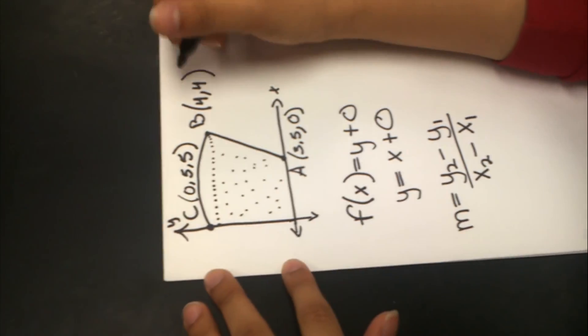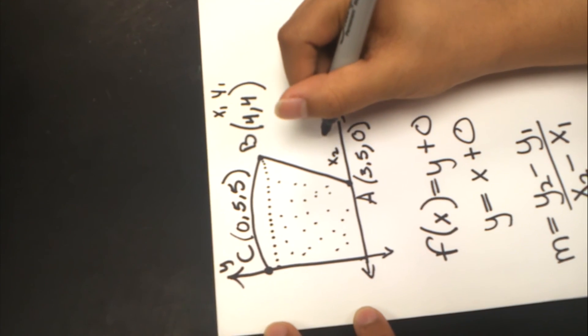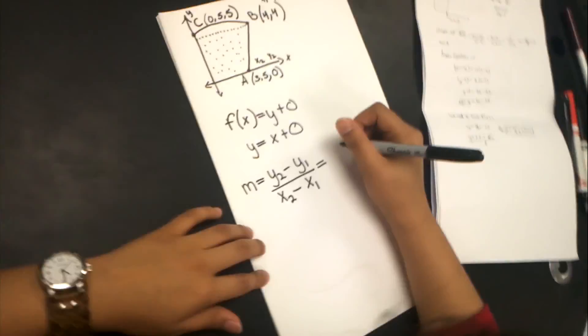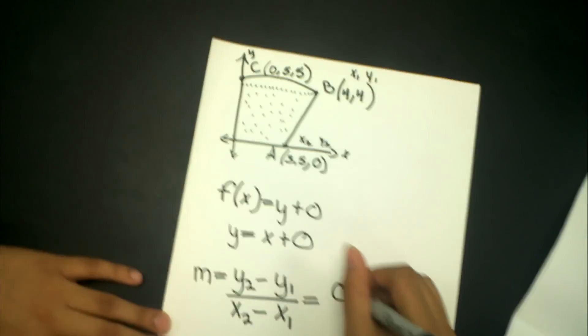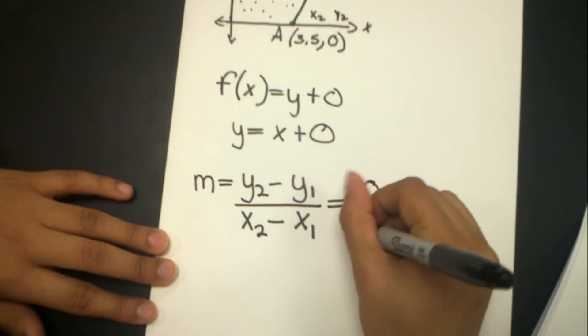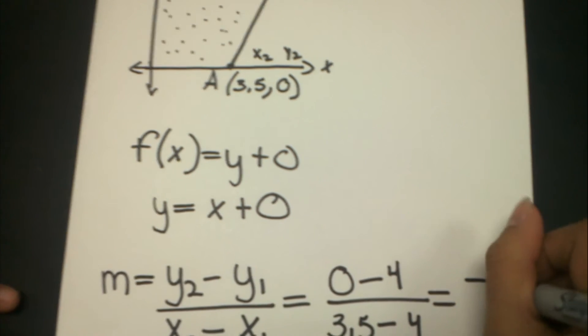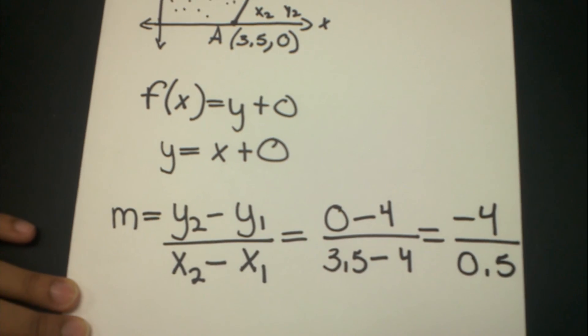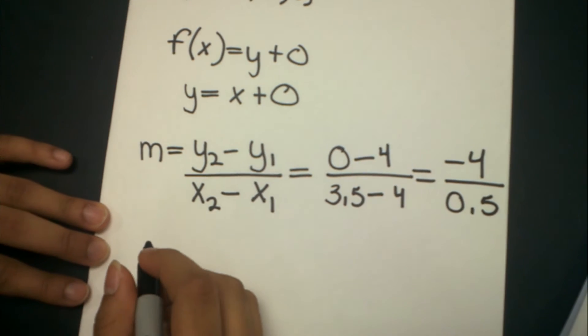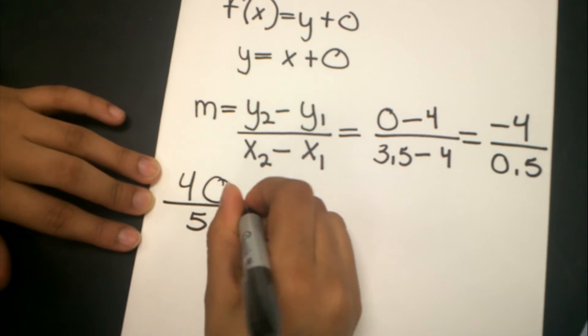Of course, this will be X1 and Y1. These over here will be X2 and Y2. I am going to plug in for these variables. We have Y2 as 0 and Y1 as 4. X2 as 3.5 and X1 as 4. If we subtract this, we get -4 over -0.5. Since we have a decimal in the denominator, we want to make these whole numbers, so we are going to multiply both sides by 10. This will be 40 over 5.